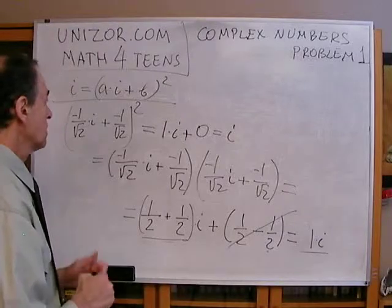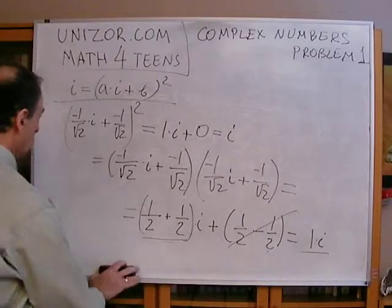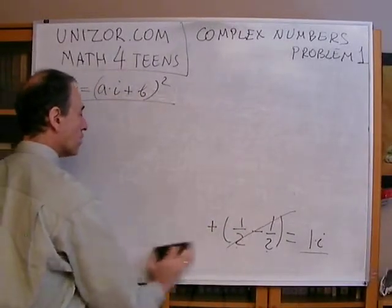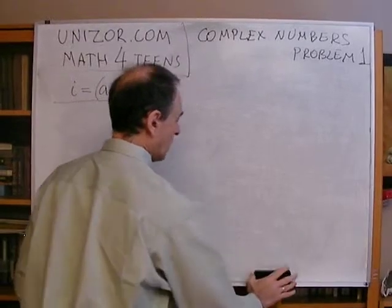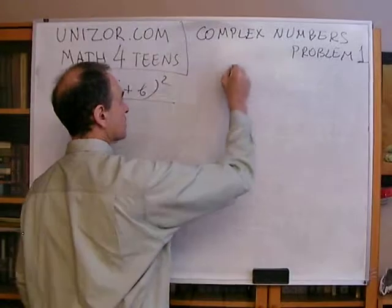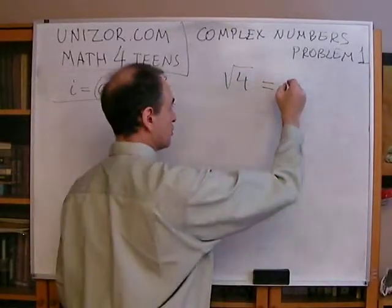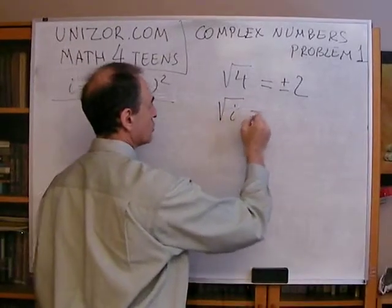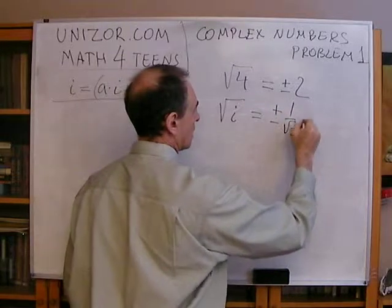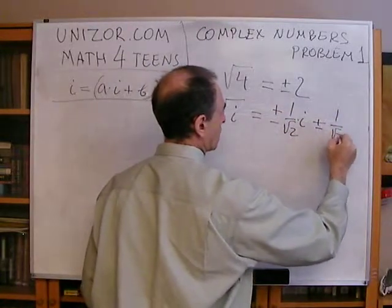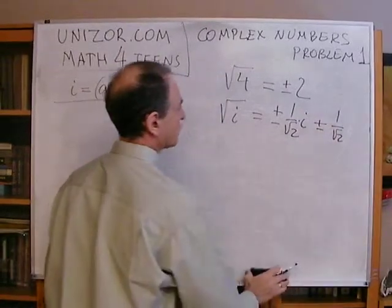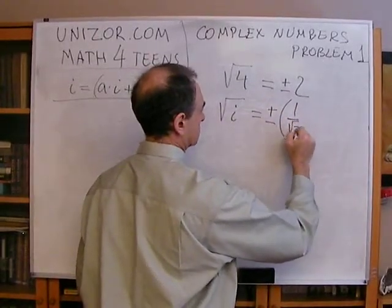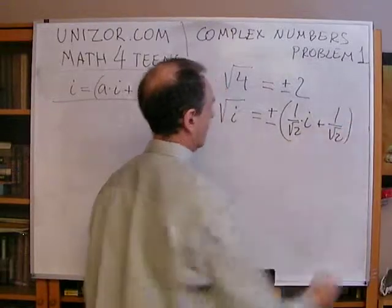What we have here is an interesting case where we get two different solutions — two different square roots of i. But this is not an unusual situation. If I ask you what is the square root of 4, the answer is not just 2, it's plus or minus 2. So there is no wonder that the square root of i also has two solutions: plus or minus 1 over square root of 2, times (i + 1).